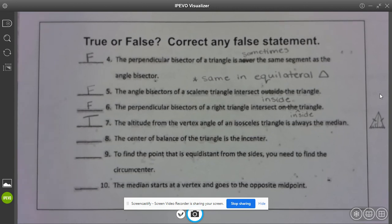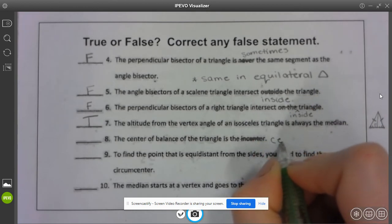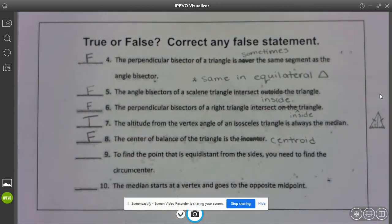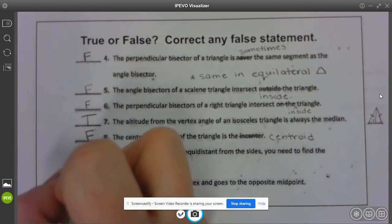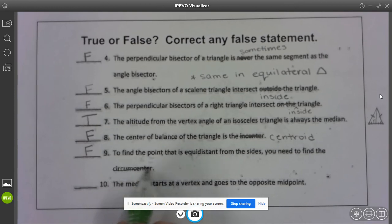The center of balance of the triangle is the incenter. Well that's actually not the incenter, that's a centroid. So that's a big F there. To find the point that is equidistant from the sides you need to find the circumcenter. Well sides go with incenter.